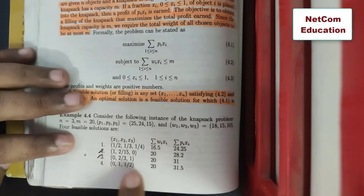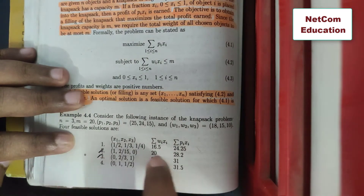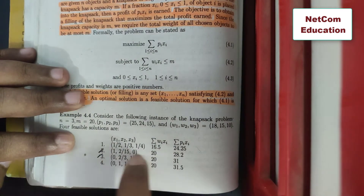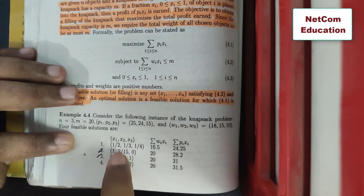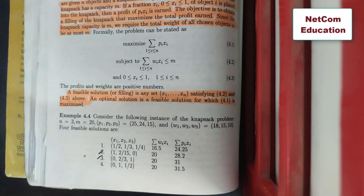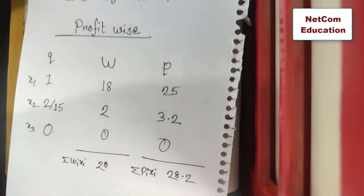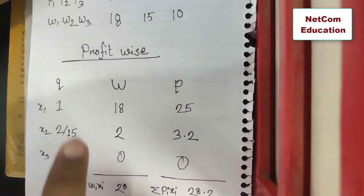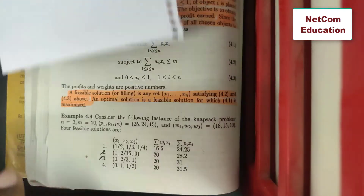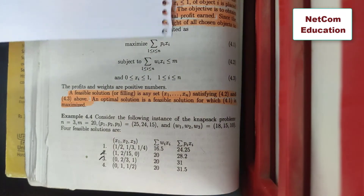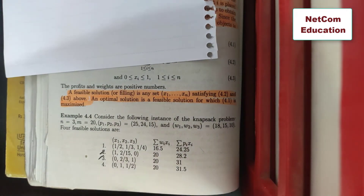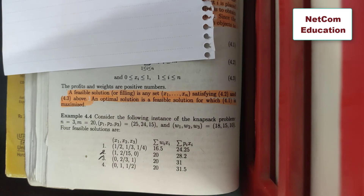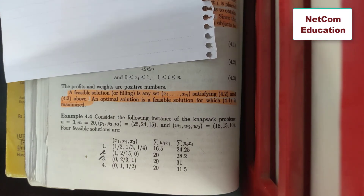The second feasible solution is profit-wise. Meaning, the profit-wise approach selects objects in order of profit.